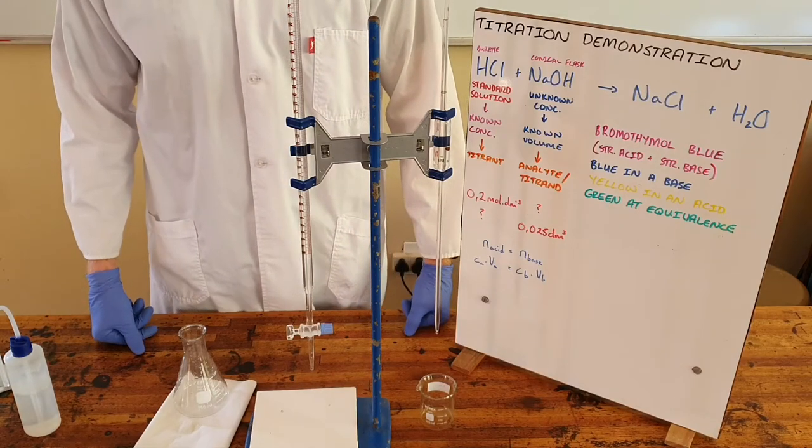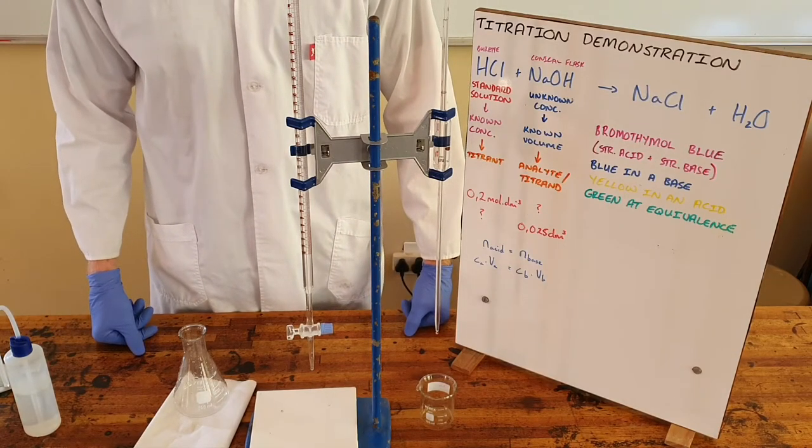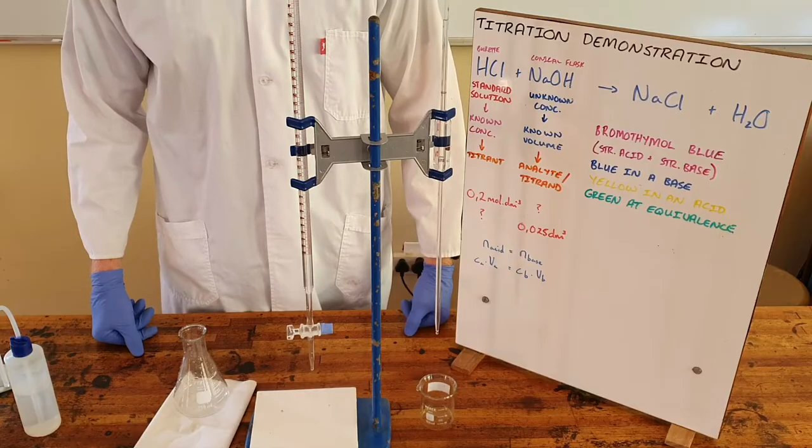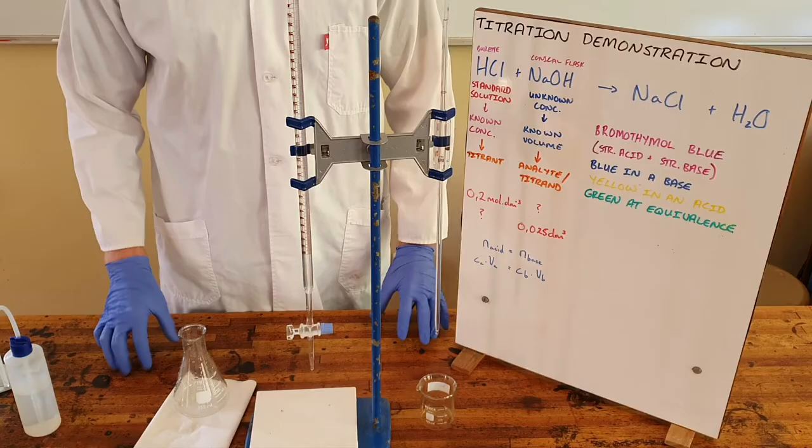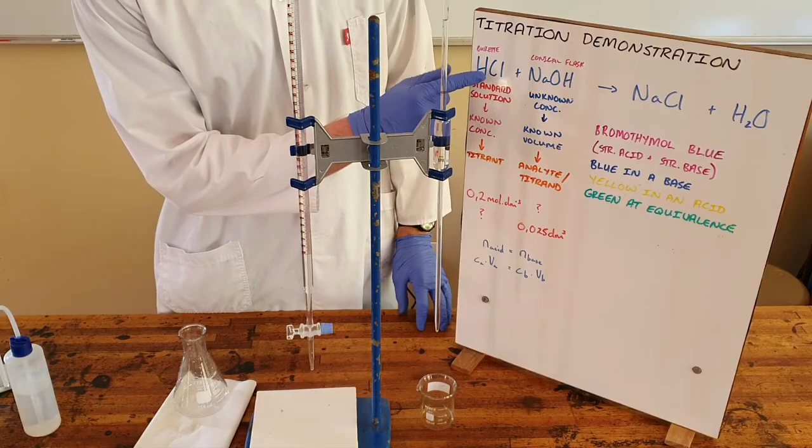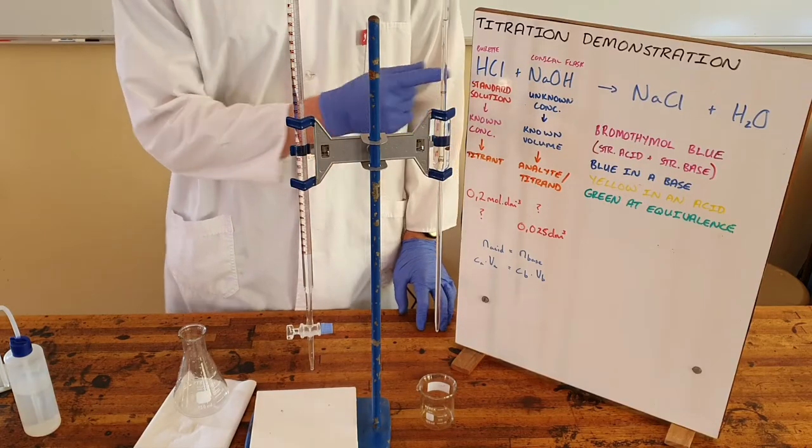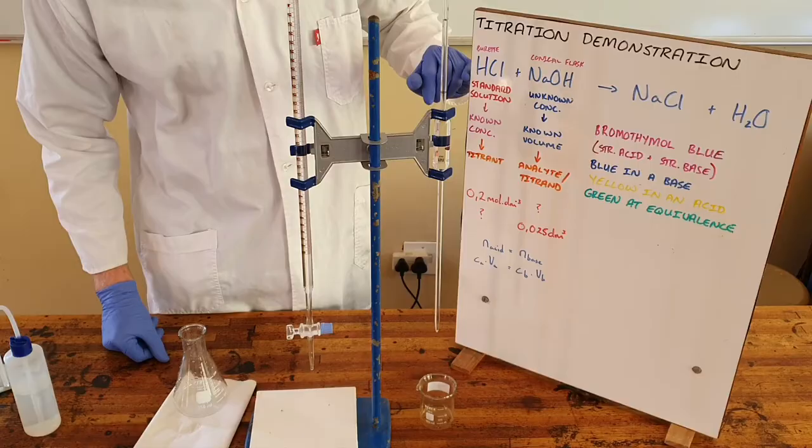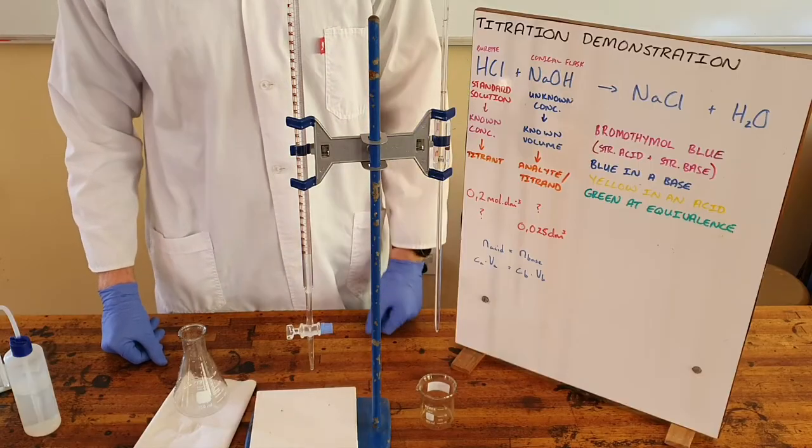We know that titration is a lab technique that is used to determine the concentration of an unknown substance. The example we are going to be doing today is where we are titrating sodium hydroxide with hydrochloric acid. The hydrochloric acid here is our standard solution.